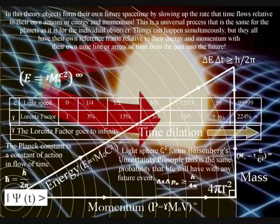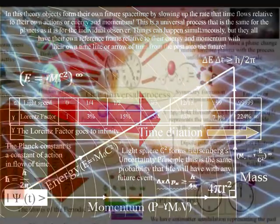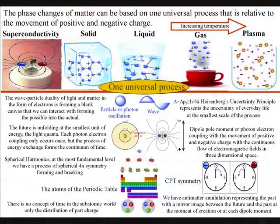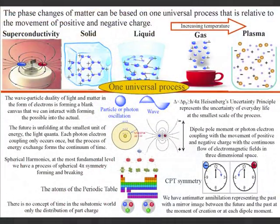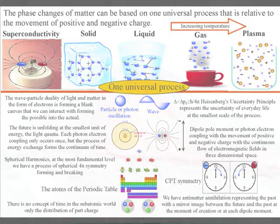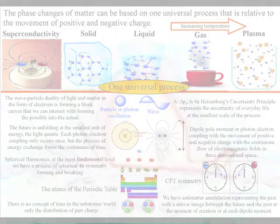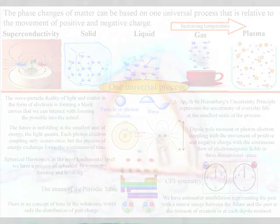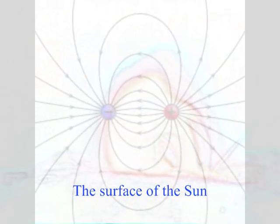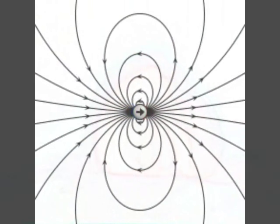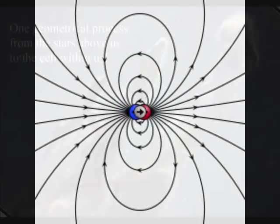I believe there are two reasons why this theory is difficult to comprehend. The first is represented in the top right-hand corner of the diagram. At high temperatures we have a phase change of matter forming plasma with the same fundamental process unfolding at a much larger scale. In the form of plasma, the movement of charge can cover an entire star or even a large area of interstellar space.